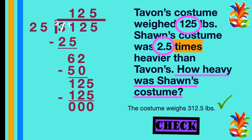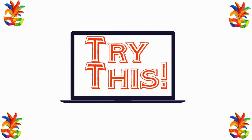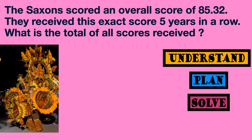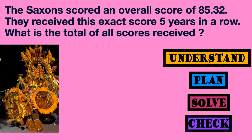We were correct — it gave us 125 as our quotient, which means our answer of 312 and 5 tenths was correct! Now try this one on your own: 'The Saxons scored an overall score of 85 and 32 hundredths. They received this exact score five years in a row. What is the total of all scores received?' Remember to use the UPSC method — Understand, Plan, Solve, and Check. Pause the video and solve this problem, then press play.